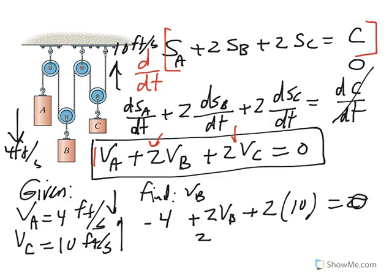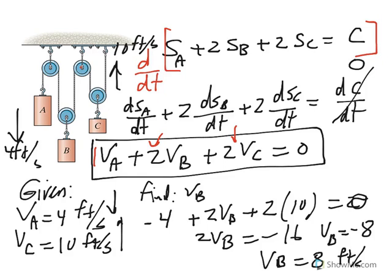And then if you solve for velocity of B, you have 2 velocity of B equal minus 16, which means velocity of B is minus 8, which means then B has no choice but to move at 8 feet per second down. See how easy it is to come up with velocity of B?